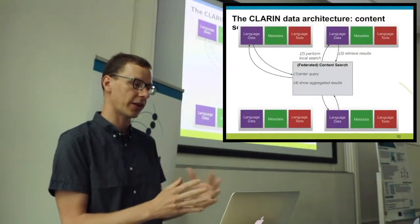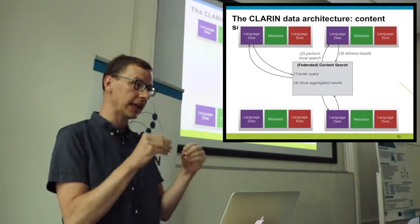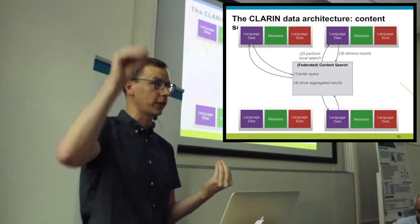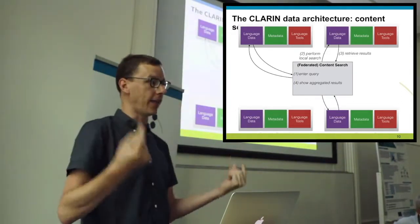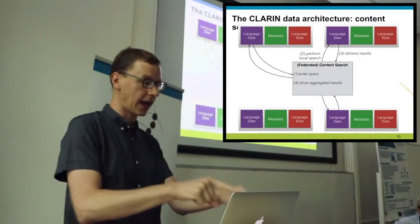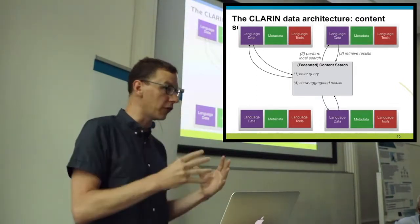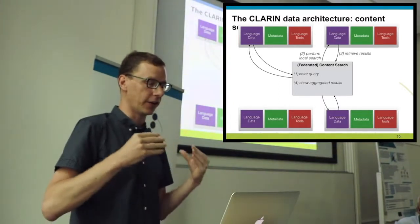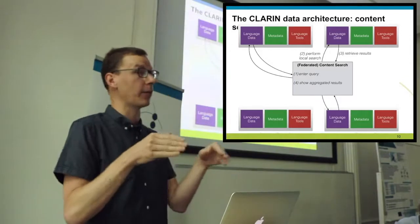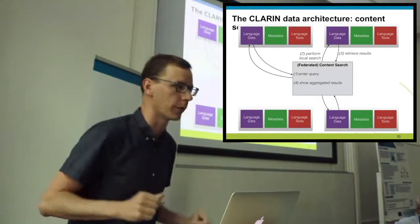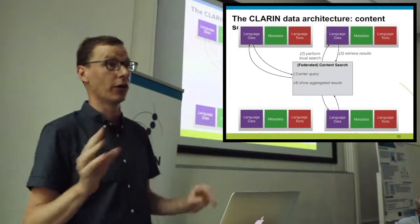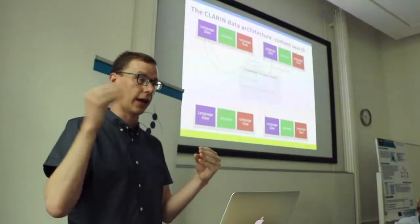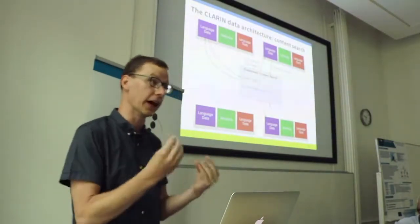For those data sets we've come up with the idea of federated content search, where instead of central indexation we send queries to the individual centers providing data sets, and they send back answers. With a centralized interface it's possible to discover where a relevant data set is accessible by searching the data itself. Once you find an interesting corpus, you can jump to that center and use specialized search tools there.